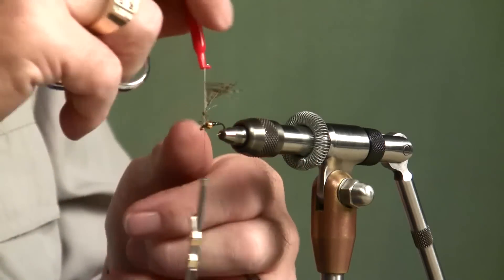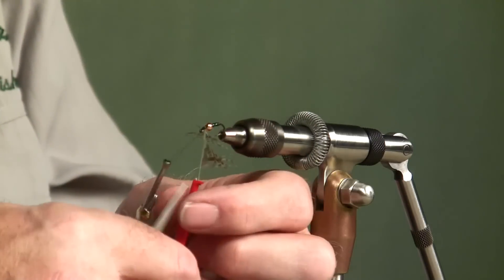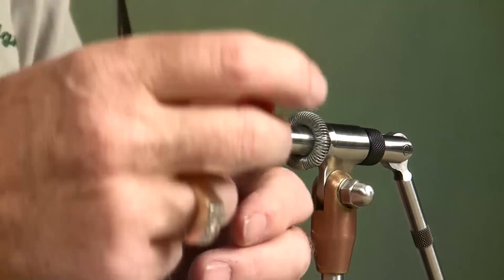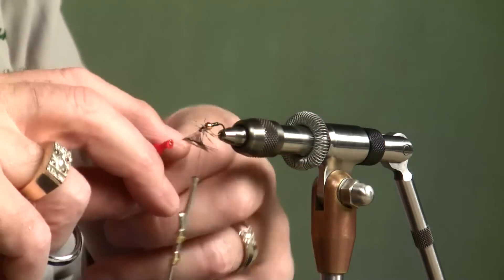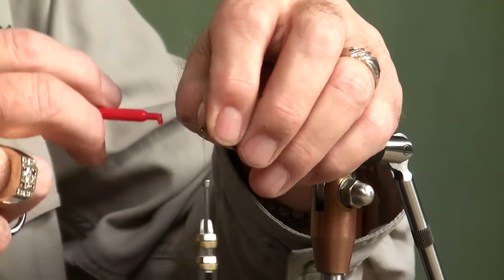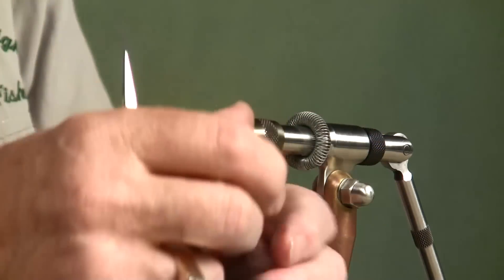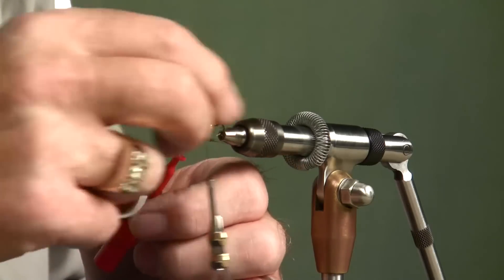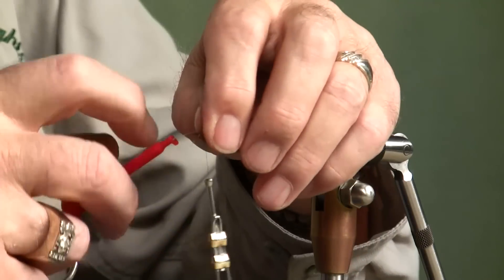Now, here it goes. Around the hook. Three, four, five wraps. Because, remember, this is not a real heavy hackle here because I've taken half of it away.